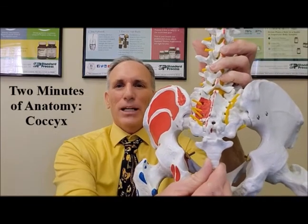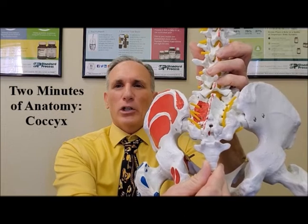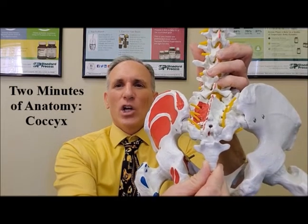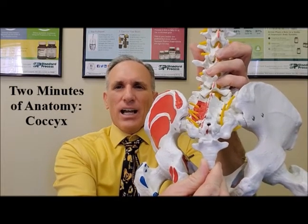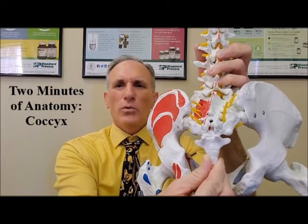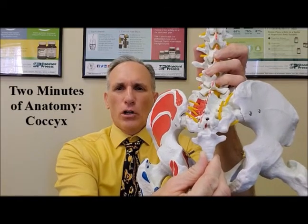The coccyx is the medical name for the tailbone. Coccyx is spelled C-O-C-C-Y-X. The coccyx consists of three to five fused vertebrae in adults.